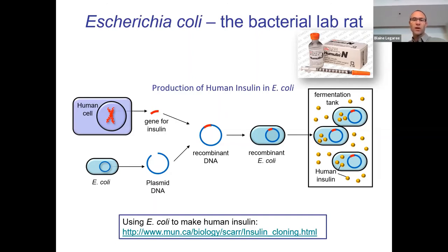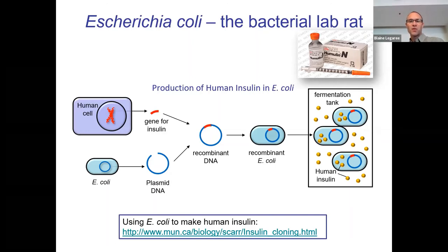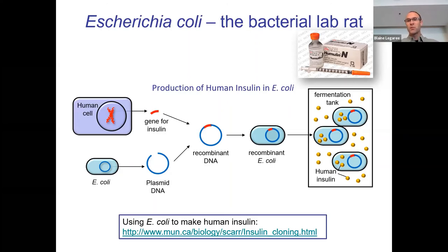A whole bunch of products have been made in E. coli over the years — some useful, some just interesting. For example, a couple of years ago researchers had cloned mammoth hemoglobin — woolly mammoth — using the genome to make mammoth hemoglobin in E. coli to learn something about mammoths. Pretty cool.